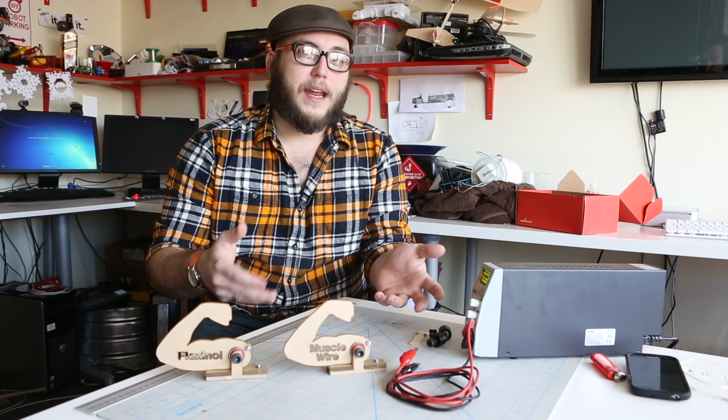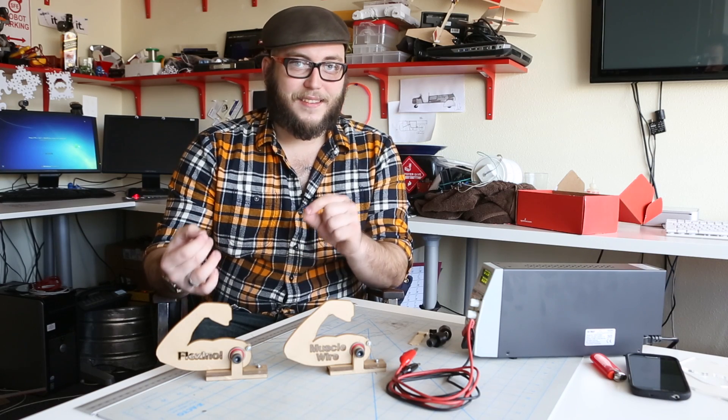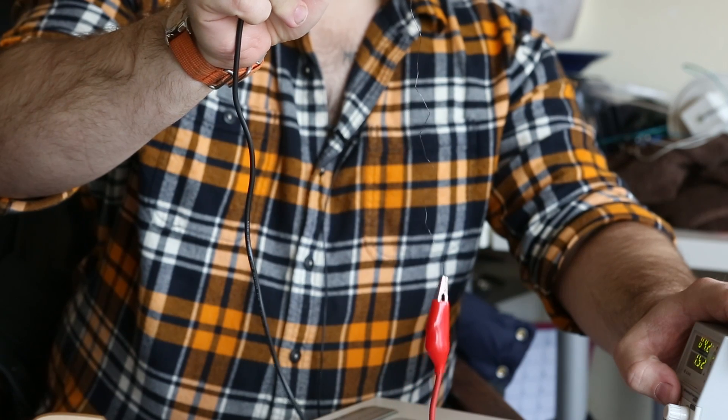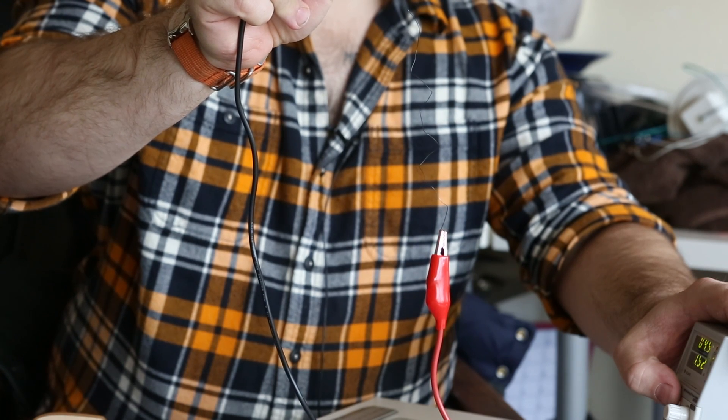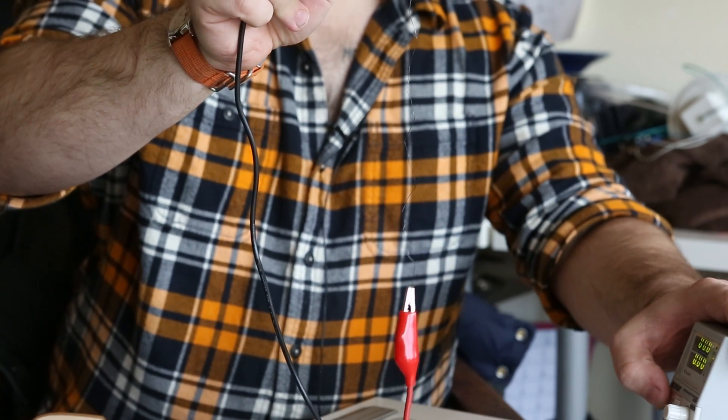So what you need to do to that is to train it. In other words to get it so hot that it actually remembers that state that it's in. And at that point once you've shaped it, heated it way up and then cooled it back down it will try to get back into that shape when it's heated again.